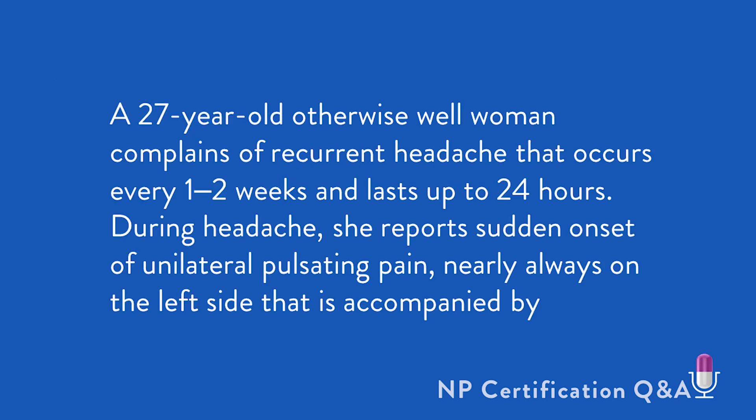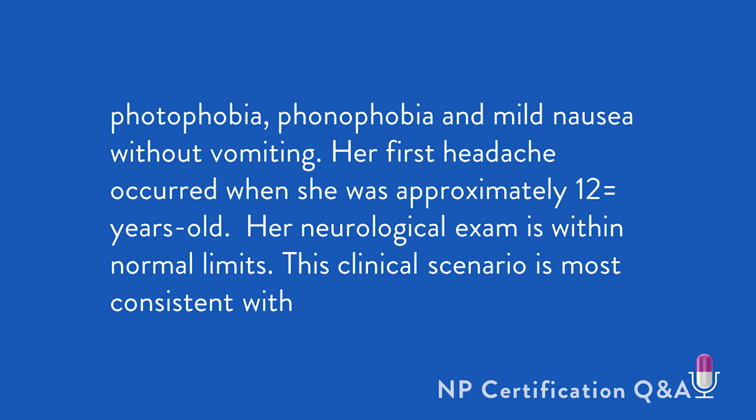A 27-year-old otherwise well woman complains of a recurrent headache that occurs about every one to two weeks and lasts up to 24 hours. During headache, she reports sudden onset of unilateral pulsating pain nearly always on the left side of her head, accompanied by photophobia, phonophobia, and mild nausea without vomiting. Her first headache occurred when she was about 12 years old. Her neuro exam is within normal limits. This clinical scenario is most consistent with: